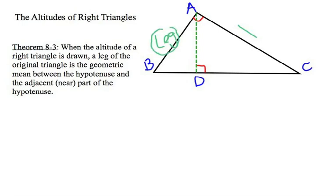This theorem says that the leg, AB, is the geometric mean between the entire hypotenuse, which is BC, and the near part of the hypotenuse, which is BD. Alright, so when you write your proportion, because the geometric mean is a proportional relationship, the leg goes in the lower left and the upper right positions of this proportion.